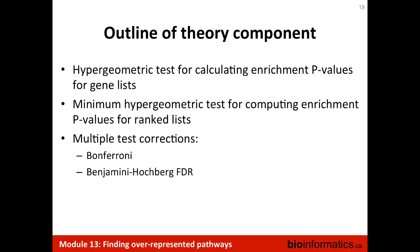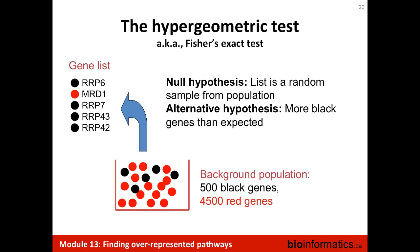The theory in the lecture is: how does a hypergeometric test work in broad principles, and how does the ranked version — the minimum hypergeometric test — work? Then we discuss two different multiple testing corrections: the classical Bonferroni test and the more common Benjamini-Hochberg test that is frequently used in genomics.